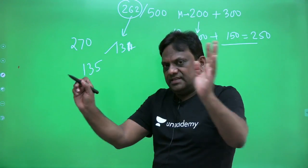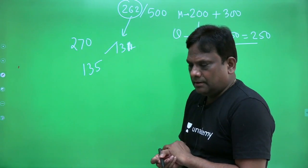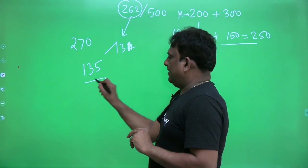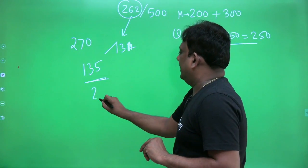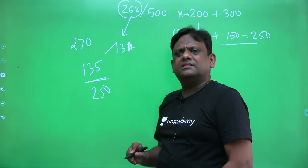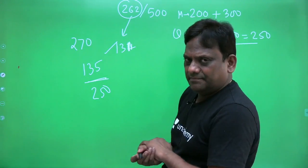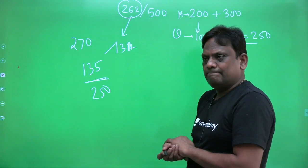If you have attempted 131 correctly, then you would have cleared engineering services preliminary. But please don't think that every time it will be 262. It may vary depending on the relative toughness, depending on number of posts. On an average, let us take 270. Means you need to attempt 135 questions correctly. Out of 250, 135 means around 55-60%.